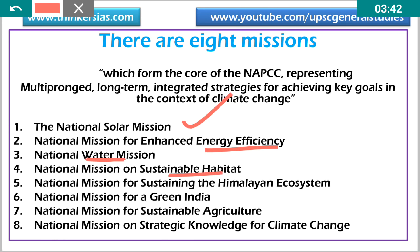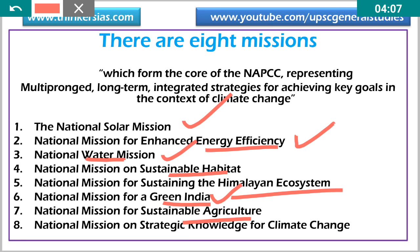The eight missions are: one, the National Solar Mission; two, the National Mission on Enhanced Energy Efficiency; three, the National Water Mission; four, the National Mission on Sustainable Habitat; five, the National Mission for a Green India; six, the National Mission for Sustaining the Himalayan Ecosystem; seven, the National Mission for Sustainable Agriculture; and eight, the National Mission on Strategic Knowledge for Climate Change.